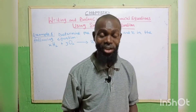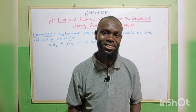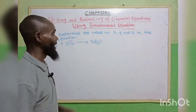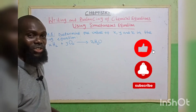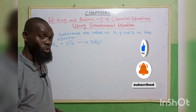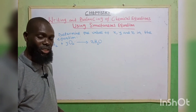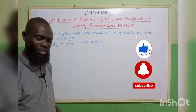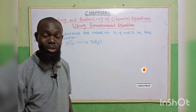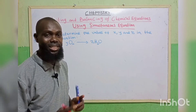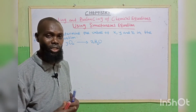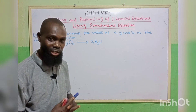Welcome back to our chemistry class. We continue with writing and balancing of chemical equations. Today we are going to be looking at the use of the simultaneous equation method to balance chemical equations. Sometimes some equations might look difficult to solve by inspection, so in this case we have to make use of the simultaneous method.